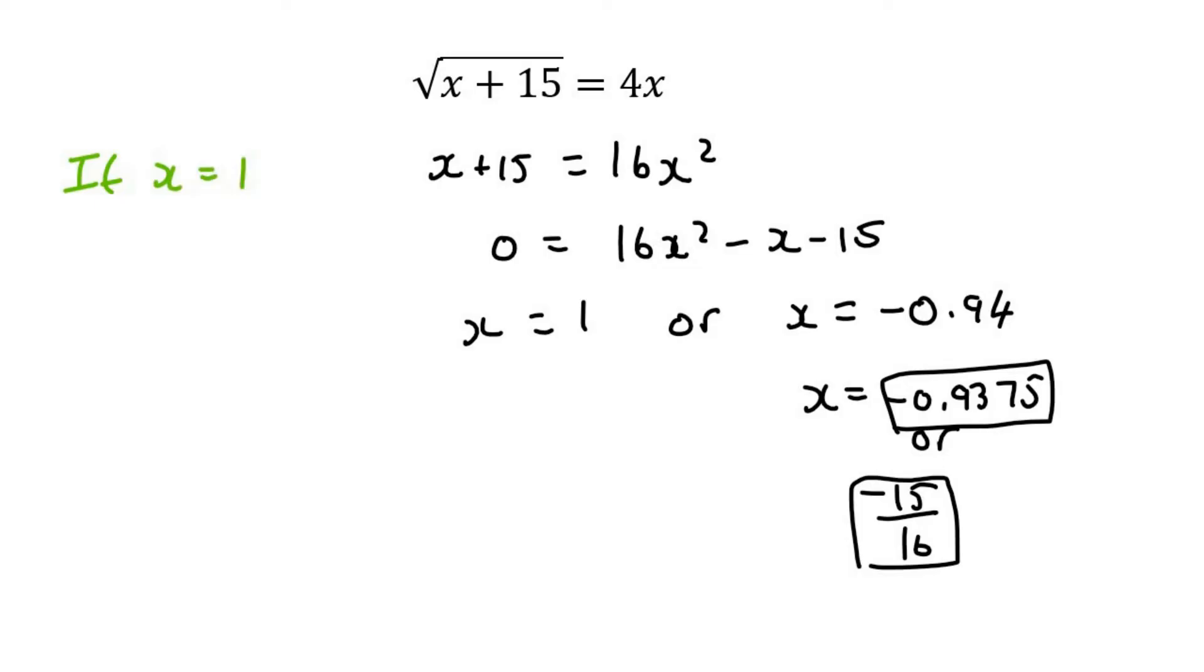If x equals 1, then the left-hand side of that equation is going to be 1 plus 15, and that equals, if you work that out in the calculator, that's going to be 4. Now if we look at the right-hand side, it's going to be 4 multiplied by x, which is 1, and that equals 4. So the left-hand side is the same as the right-hand side, and so this answer works. This one works nicely.